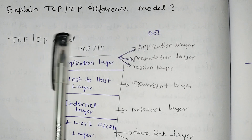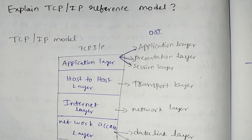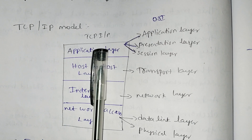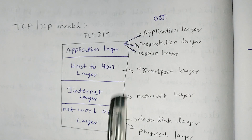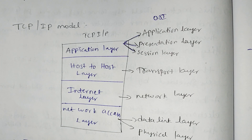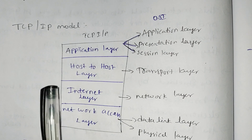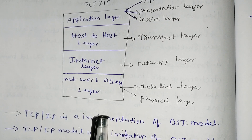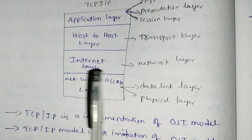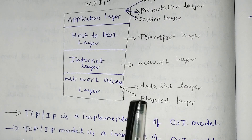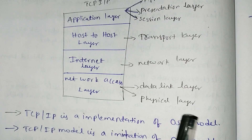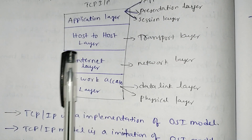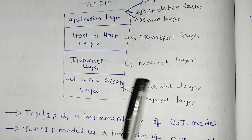Now we are going to show you the TCP/IP reference model. In the TCP/IP model, compared to the OSI model, we have a network access layer. In the network access layer, we have a combination of the data link layer and physical layer. In the internet layer, we have only the network layer.